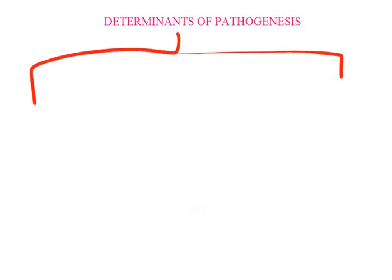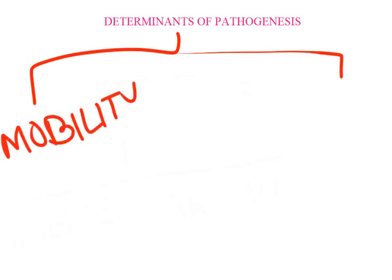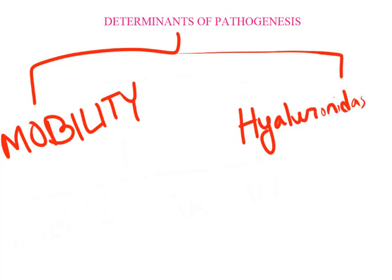They are: 1. Mobility — Tryponema pallidum is mobile because it has endoflagella. 2. Hyaluronidase — Tryponema pallidum releases hyaluronidase. It is an enzyme which breaks down the hyaluronic acid in the ground substance of tissues and enhances the invasiveness of the organism.